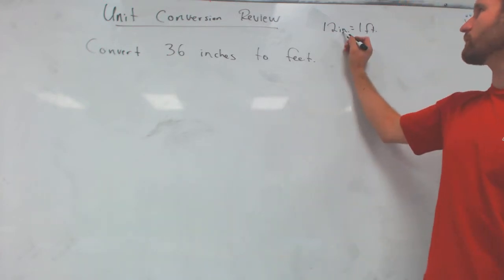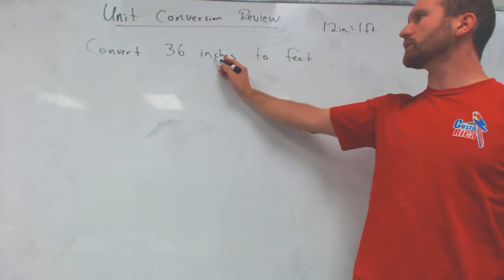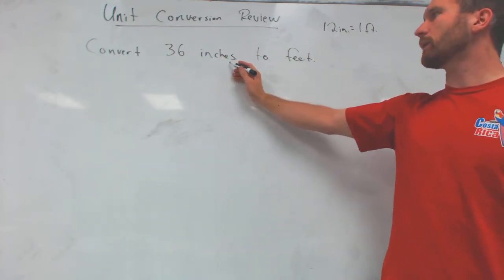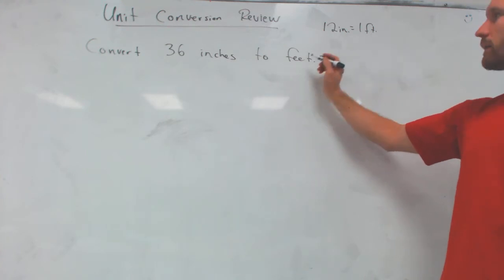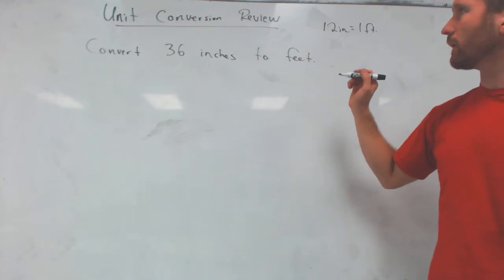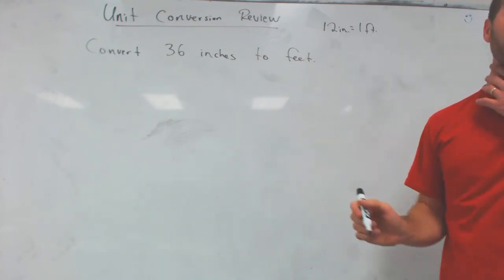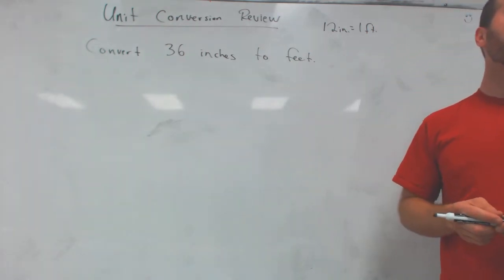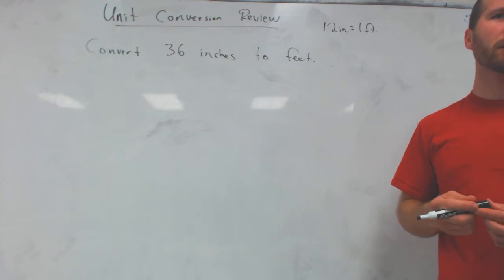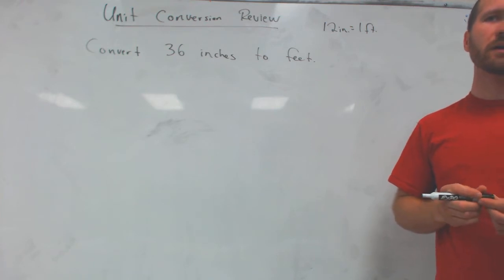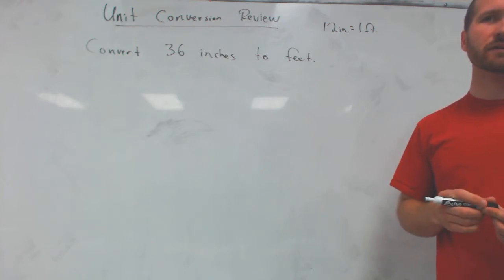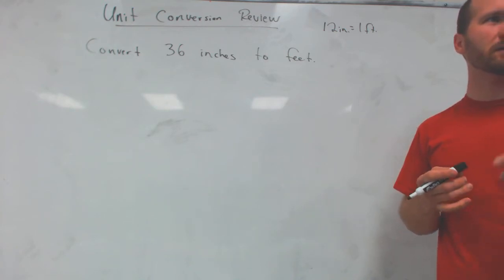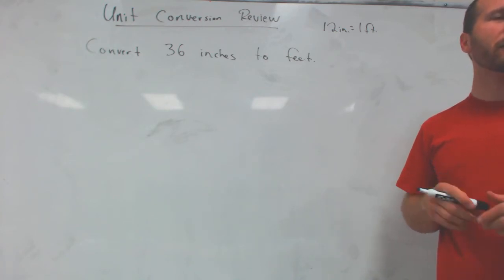This is the variation for inches — you can write inches like this or like this: I-N dot, or inches. Feet: F-T, or feet. Now that we know this conversion factor, do you guys remember from last year how we use these conversion factors? We turn them into something else. We turn them into a fraction.